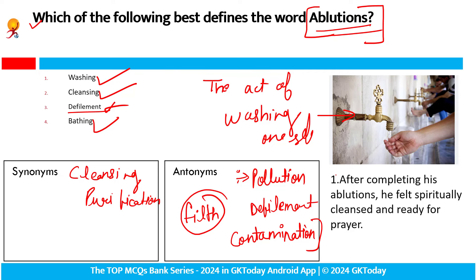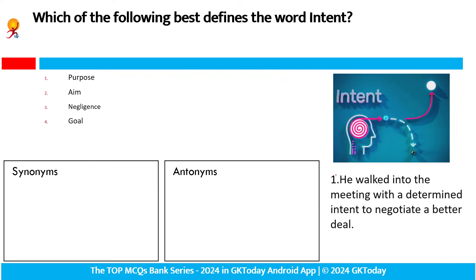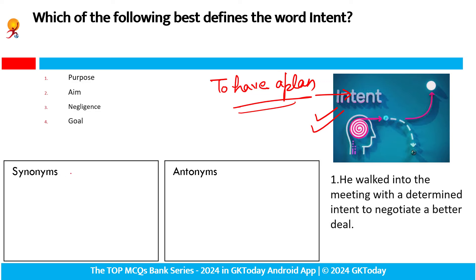Let's move to the next one. Which of the following best defines 'intent'? Intent yani — spiritual ko samajh ki aapko kya lag raha hai, kya matlab hoga intent ka. Intent ka matlab hota hai: to have a plan. Intent ka matlab hota hai purpose, aim, role. Kya saari synonyms hain iske.